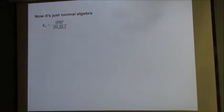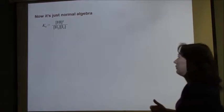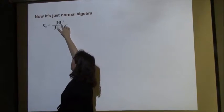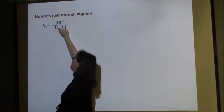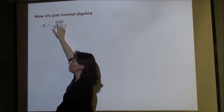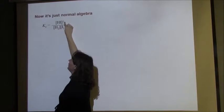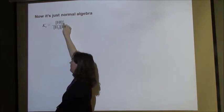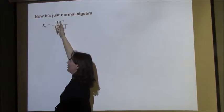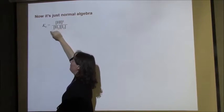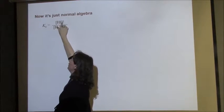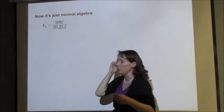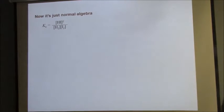Think back to how we write an equilibrium expression. It's concentration raised to the coefficient. Since the coefficient was 2, we can't forget to square this. If the coefficient had been 5, this would be to the 5th. But because the coefficient was 2, it's squared. So that 2 gets distributed both in your ICE table and when you write your equilibrium expression. Be really careful about that.